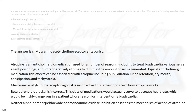Atropine is an anticholinergic medication used for a number of reasons, including to treat bradycardia, various nerve agent poisonings, and intraoperatively at times to diminish the amount of saliva generated. Typical anticholinergic medication side effects can be associated with atropine, including pupil dilation, urine retention, dry mouth, constipation, and tachycardia.